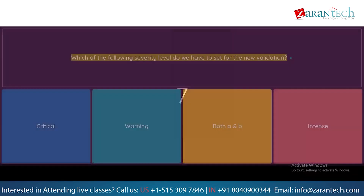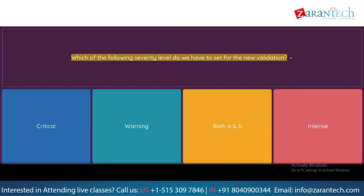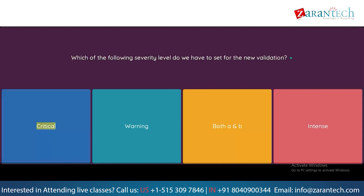Question: Which of the following severity levels do we have to set for the new validation? Option 1: Critical. Option 2: Warning. Option 3: Both A and B. Option 4: Intense.